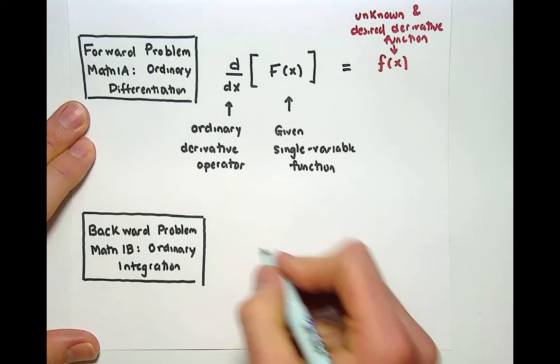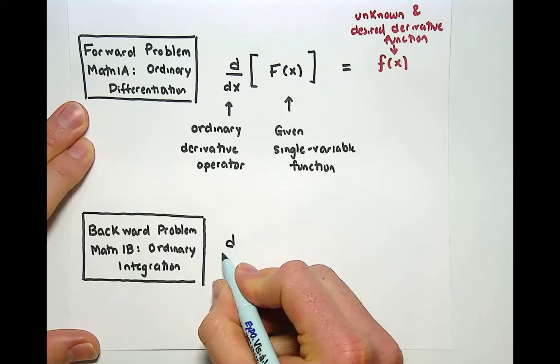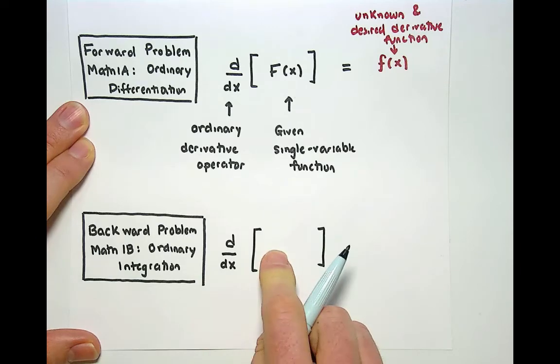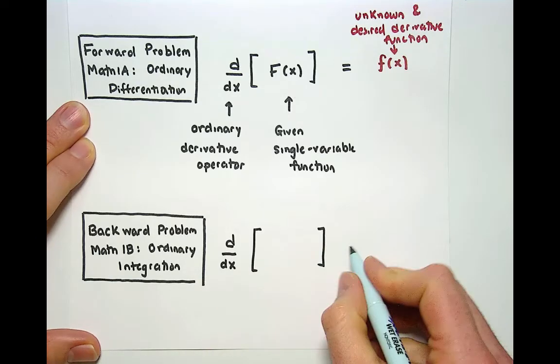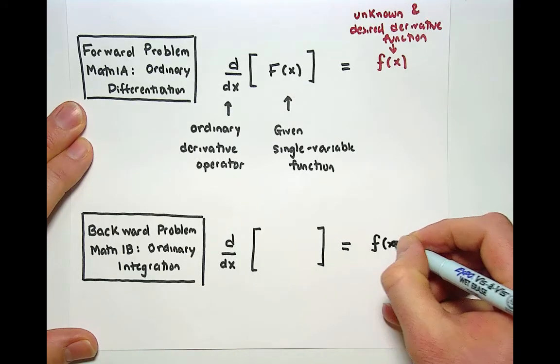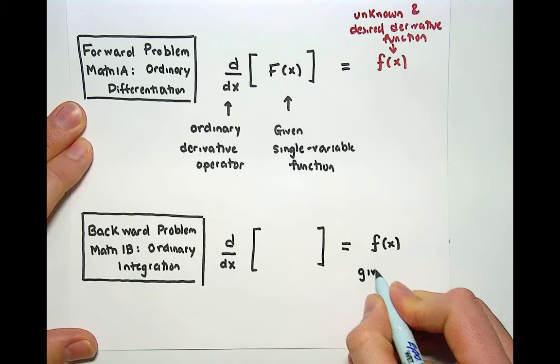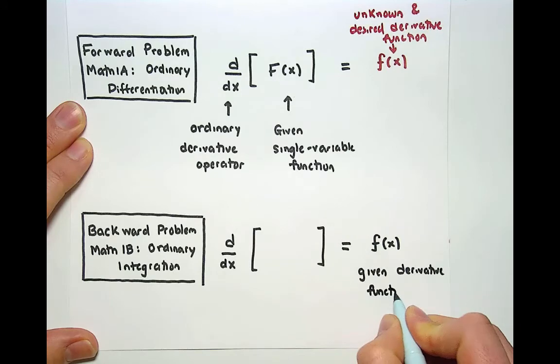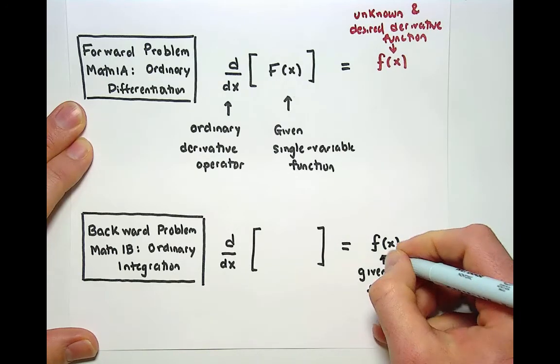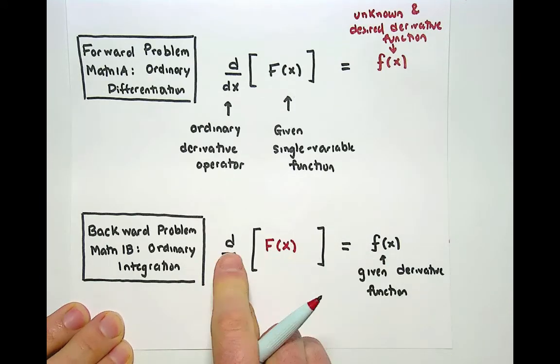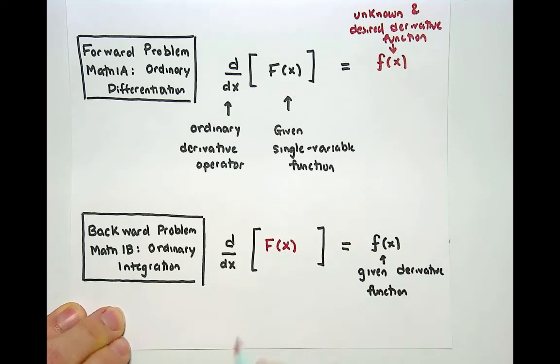The setup for this problem is actually strikingly similar to the forward problem. In particular you start with the ordinary derivative operator but instead of me giving you an input capital F(x) function and then you producing the derivative, I give you a derivative function that is of course single variable and then you tell me what capital F(x) function do you need to differentiate in order to produce this derivative function.